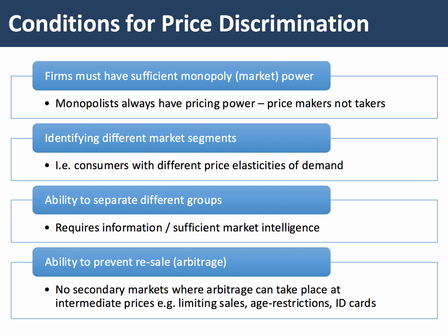Another really important condition is the ability to prevent what's called arbitrage — prevent resale. Businesses have to prevent consumers switching from one supplier to another. Consumers might have purchased the product at a lower price and then resell it to consumers who would otherwise have paid a more expensive price. There are a number of ways in which you can prevent resale in a secondary market.